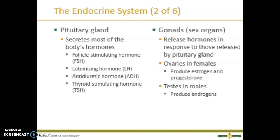The pituitary gland, also located in the brain, is known as the master gland because it secretes most of the body's hormones. These hormones include follicle stimulating hormone (FSH) and luteinizing hormone (LH), which are important to female reproduction; antidiuretic hormone (ADH), which helps prevent loss of water by the kidneys; and thyroid stimulating hormone (TSH), which triggers the thyroid gland to function.